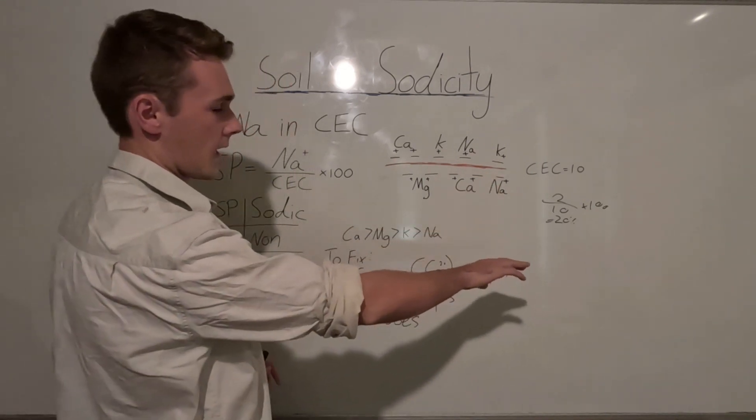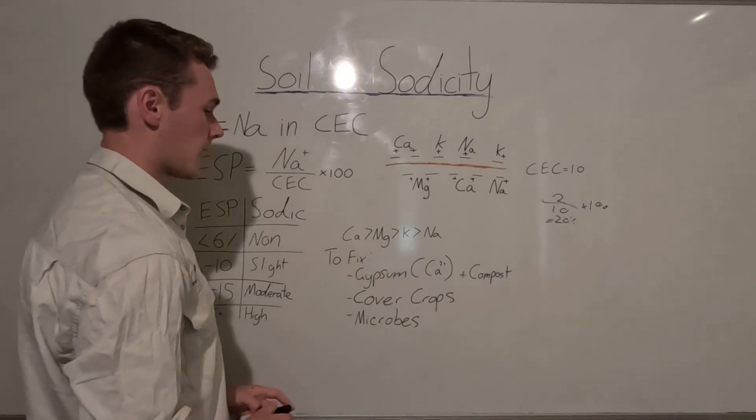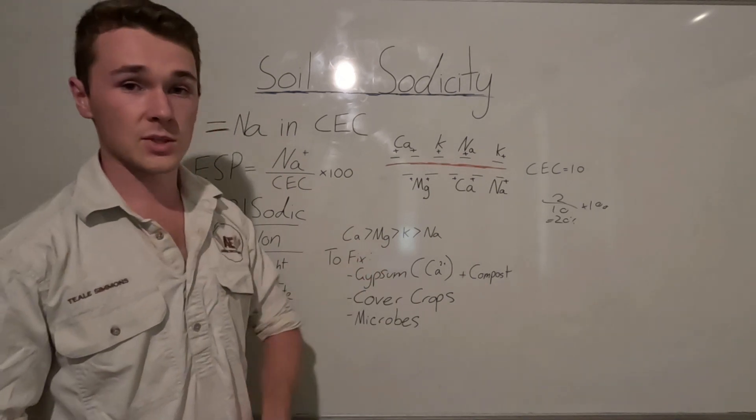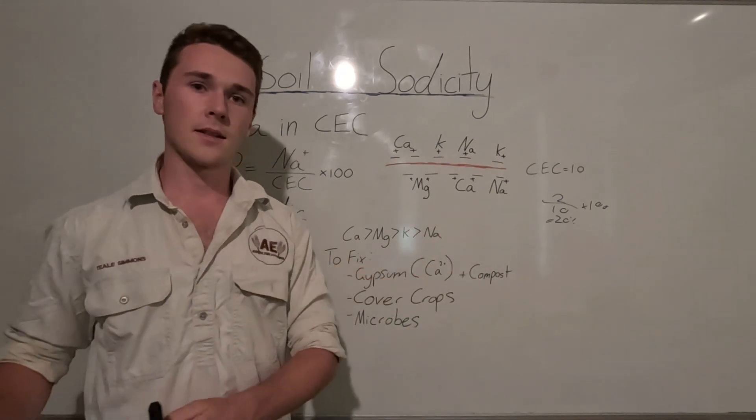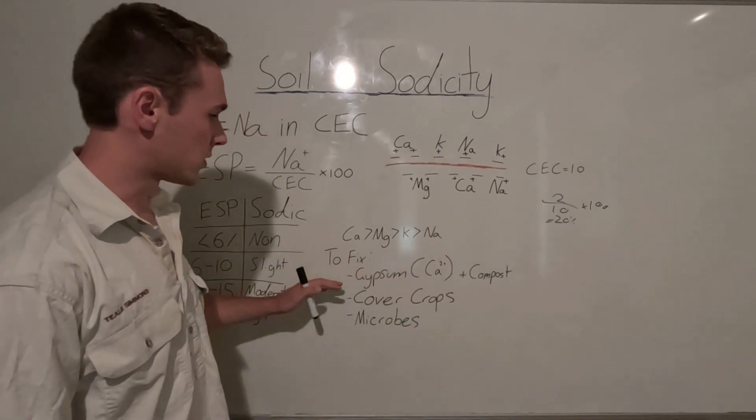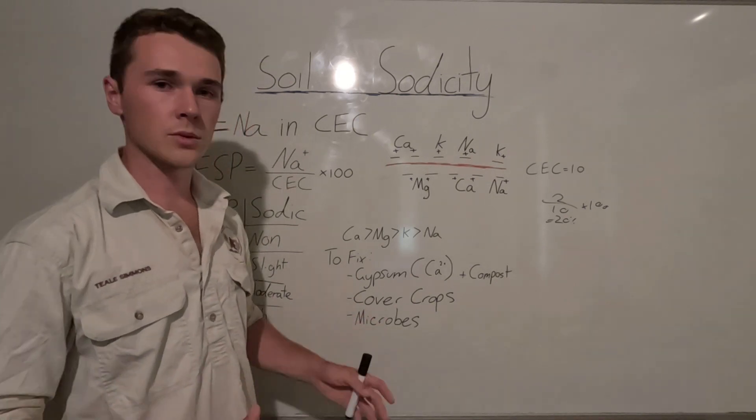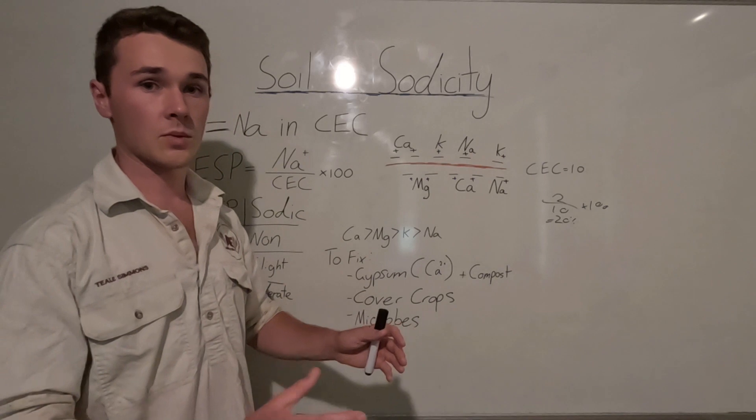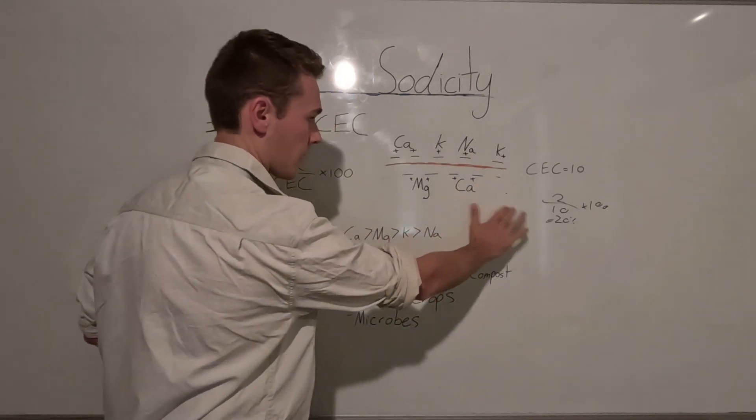And so there's a few ways we can reduce sodium in our soils, and this is all based around knocking off the sodium cation from our soil colloids. And so the easiest way is to apply gypsum. Gypsum is by far the better amendment to apply, definitely compared to lime, and that's mainly because gypsum is more soluble when we apply it, so the calcium becomes available to then knock off this sodium and then replace it with calcium.